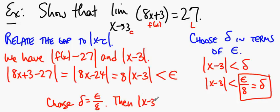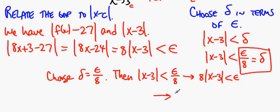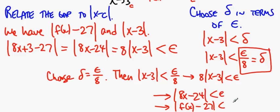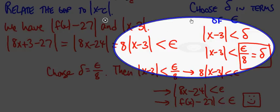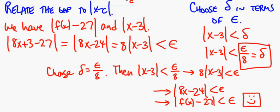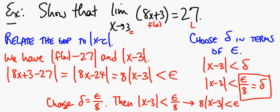We write it out: choose delta equal to epsilon over 8. Then the absolute value of x − 3 is less than epsilon over 8, so 8 times |x − 3| is less than epsilon, so the absolute value of 8x − 24 is less than epsilon, and so the absolute value of f(x) − 27 is less than epsilon. And we're done. If you can pick up the key algebraic manipulation — going from the expression for the gap to isolating |x − c| — you are in excellent shape. That's all I want to say about epsilon and delta; the rest I'll say when we get to class. Thanks, everybody.